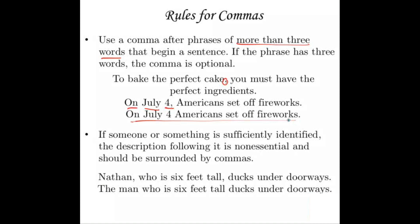If someone or something is sufficiently identified — say by name — any description following it is non-essential and should be surrounded by commas. For example: "Nathan, who is six feet tall, ducks under doorways" — we've already said Nathan, which is enough to identify him, so the description gets commas. But "the man who is six feet tall ducks under doorways" — we've only said "the man," which narrows it down to half the human population, so "who is six feet tall" is essential and gets no commas.